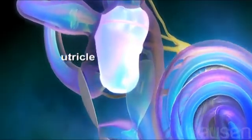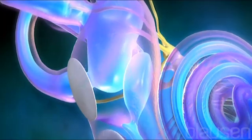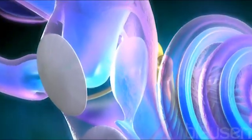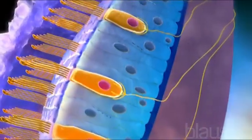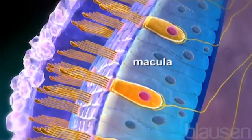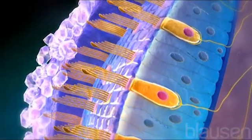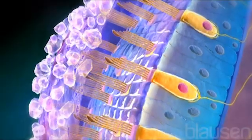The saccule and the utricle. Inside the utricle and saccule are hair cells similar to those in the organ of Corti. The hairs are clustered in the macula, where their processes are embedded in a gelatinous mass and lie under a thin layer of crystals called otoliths.